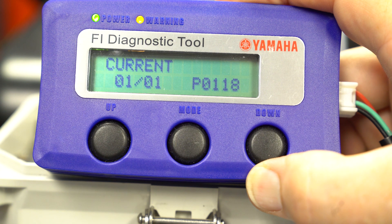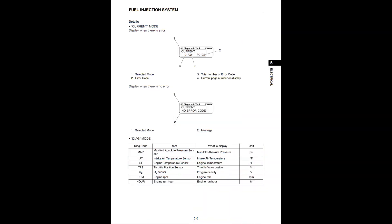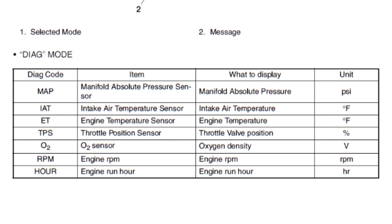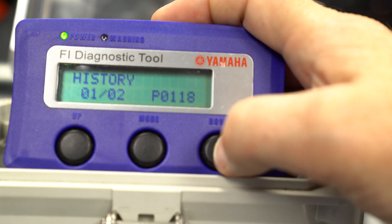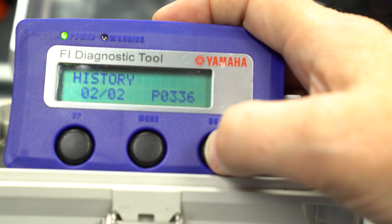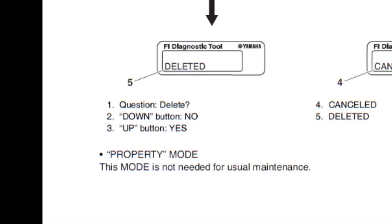Current mode displays active error codes, meaning errors that have not been repaired or have not moved into history after the repair. Diagn mode allows you to see the following information in real time as the engine is running. History displays error codes for failures that have been repaired and moved into history from current. Clear erases error codes from history, and property is not used for service work.